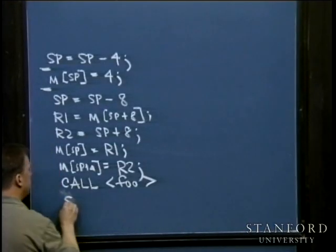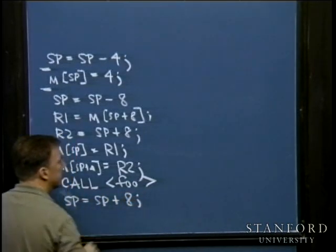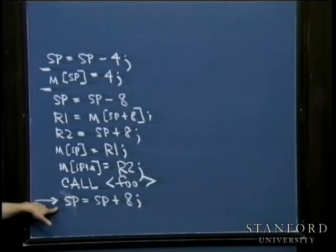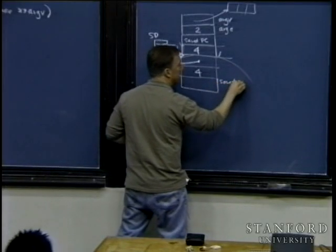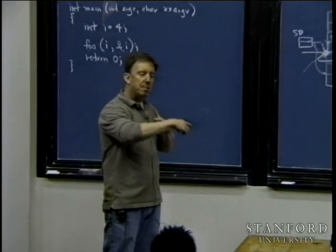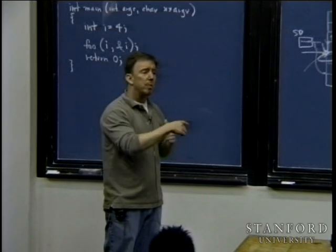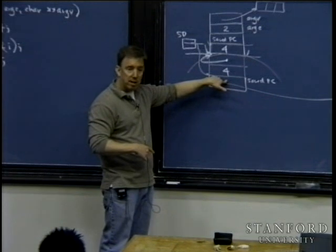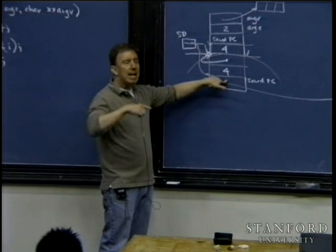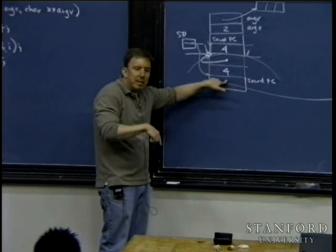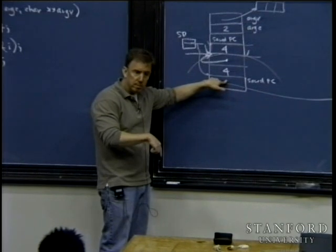The call instruction automatically decrements SP by 4 more bytes and lays down the saved PC — the address of the next instruction after the call. So when foo is done executing, it has information in its activation record about where to jump back to. At the hardware level, this is a piece of popcorn to remember where you were walking before you took a turn. This transfers control over to foo.